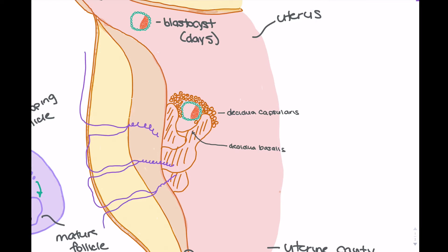The spiral arteries lead up into the decidua basalis. The trophoblast cells on the outside of the blastocyst are differentiating at a rapid rate and beginning to form finger-like projections that lead into the decidua basalis. As these projections continue to develop, they form small wells making up the fetal portion of placental circulation. The cells within these finger-like projections are called syncytiotrophoblasts — the differentiated cells that create these projections.